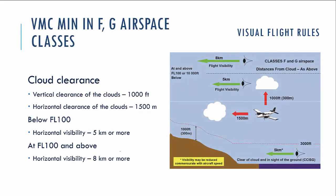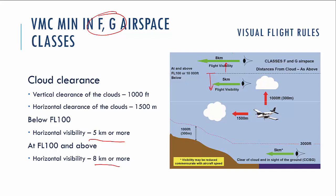What are the VMC minimums in uncontrolled airspaces like F and G? Cloud clearance will be the same: vertical clearance of clouds 1000 feet, horizontal clearance 1500 meters. Horizontal visibility remains the same — 5 kilometers or more below flight level 100, and 8 kilometers or more at flight level 100 and above. There is one more exception for uncontrolled airspace when flying near terrain: at altitude below 3000 feet or below 1000 feet above terrain, flight visibility should be at least 5 kilometers, and clear of cloud with sight of the surface.